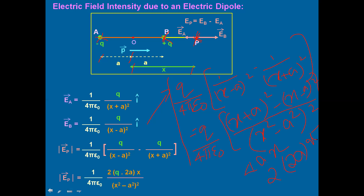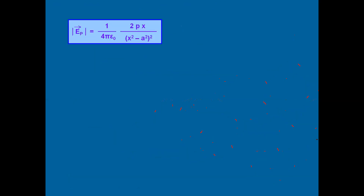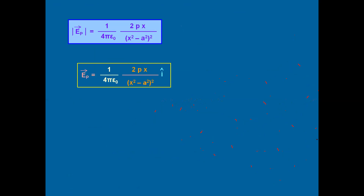Our equation becomes (1/4πε₀) × (2 × Q × 2a × x) / (x²−a²)². Since Q × 2a can be replaced with P (the dipole moment), the electric field due to the dipole at the axial point is E = (1/4πε₀) × (2Px) / (x²−a²)². In vector form, the direction is along î — the line joining minus Q and plus Q.